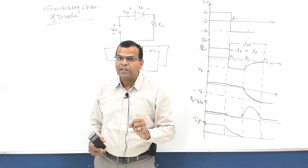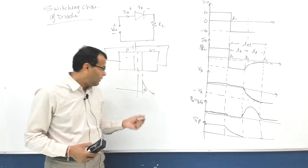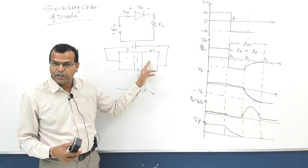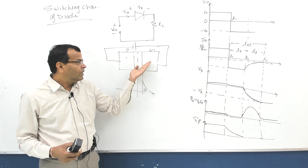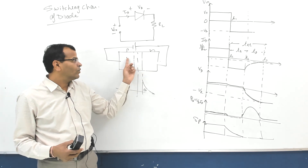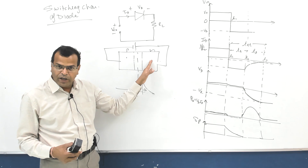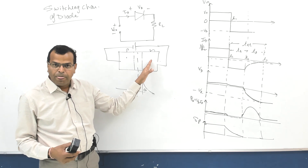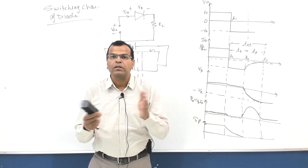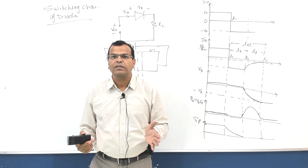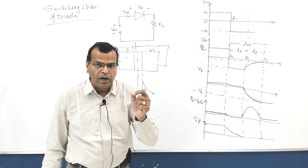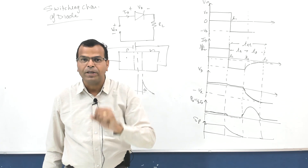The diffusion capacitance exists because of the storage of excess minority carriers on this side. When these charges move, and similarly excess electrons stored on the P side move from P to N side, the diffusion capacitance is discharging. The diffusion capacitance is also given another name - it is called storage capacitance.